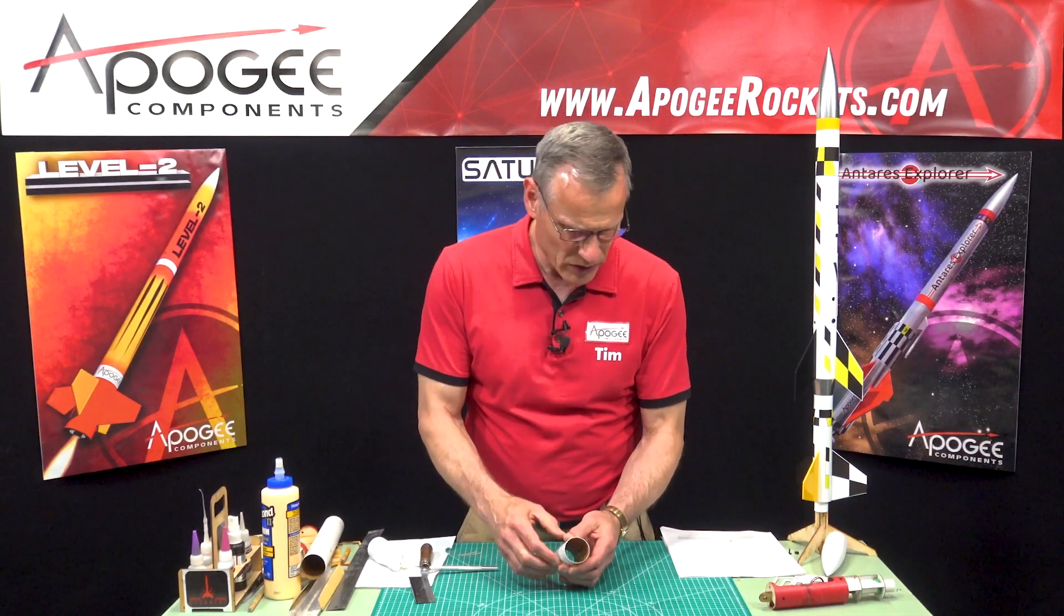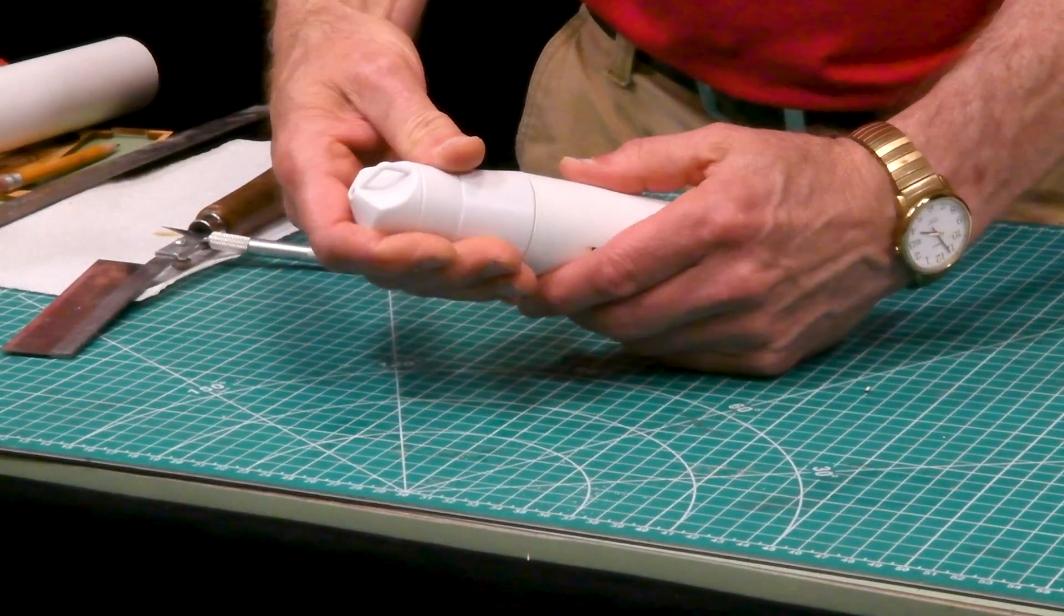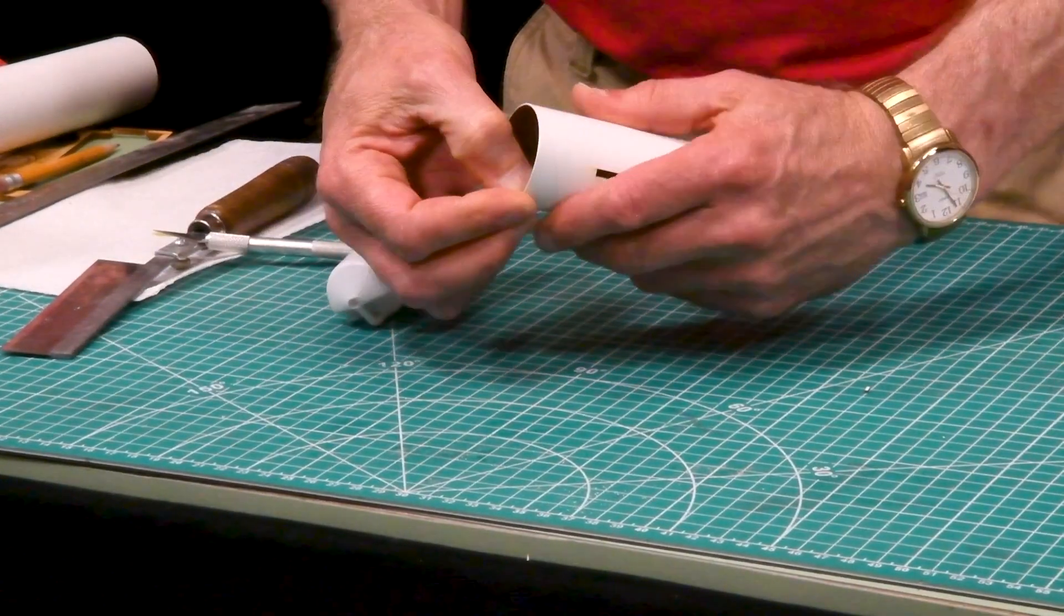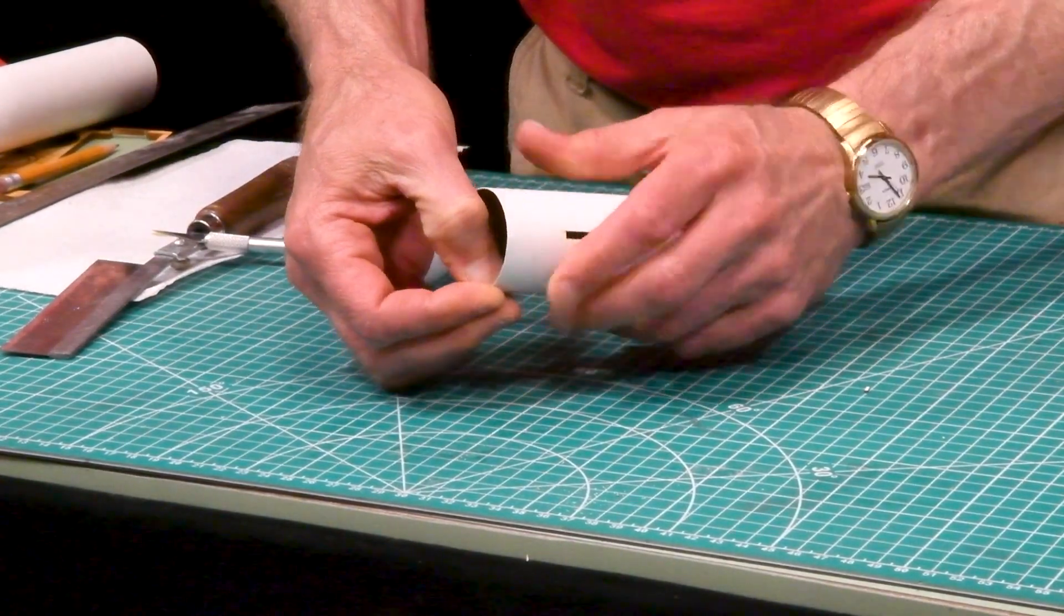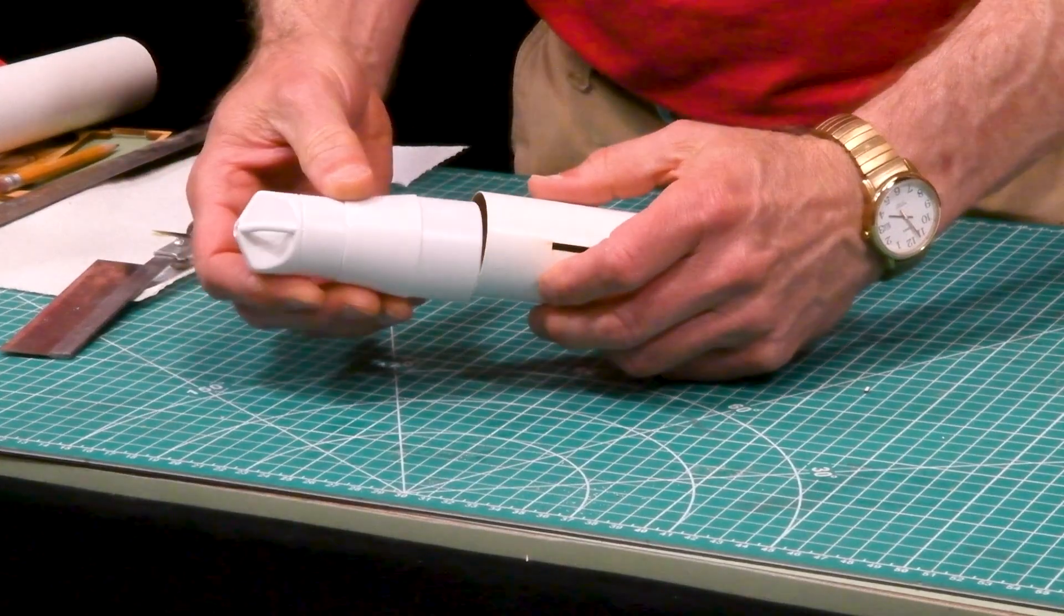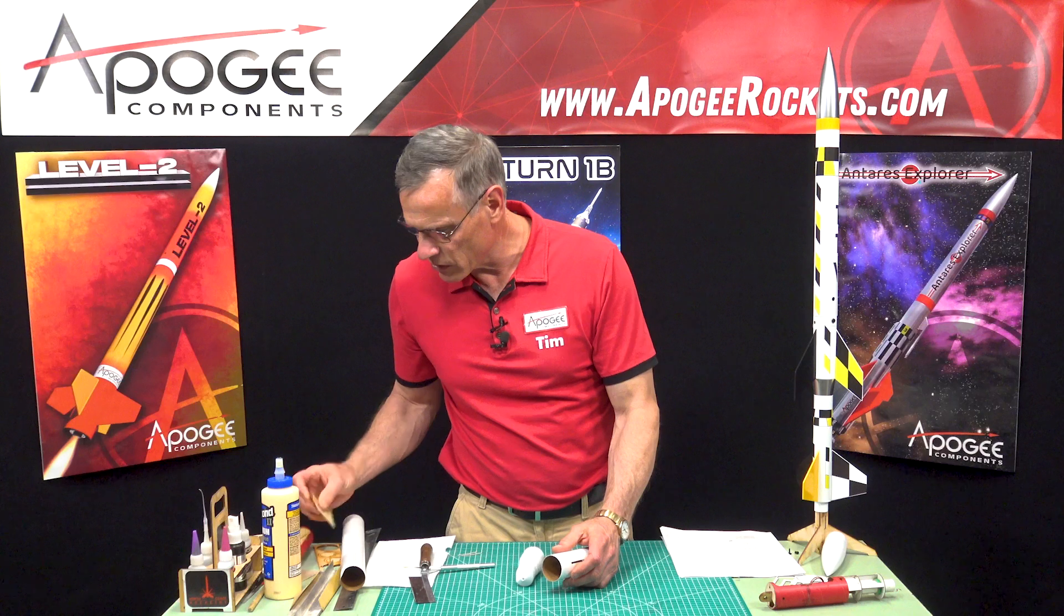Now on this we want to sand out the inside a little bit and burnish down that edge. We want this to be a nice loose fit.